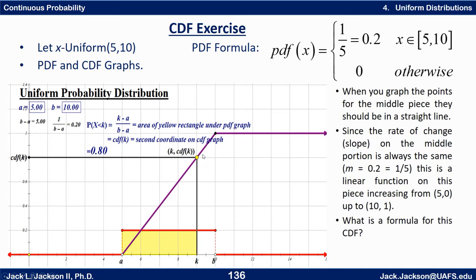The fact that we're adding density at a constant rate makes the CDF have a constant slope. And what is the slope of this line? The slope is how much the graph goes up when we go to the right one unit. In this case, every time we go right one we go up one-fifth — which is exactly the slope, and is exactly the y-value of the PDF curve. The PDF has a slope of zero because it's horizontal, but its y-value of one-fifth is the slope of the slanted part of the CDF graph.